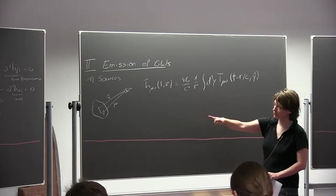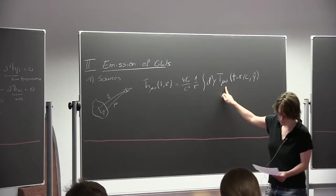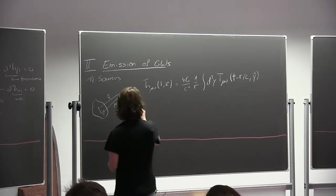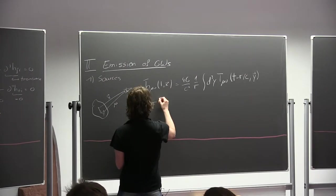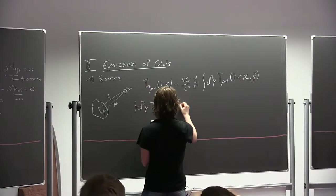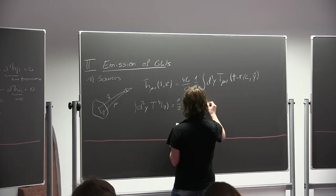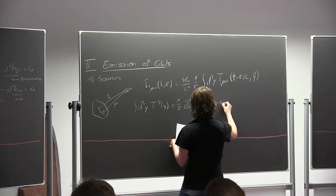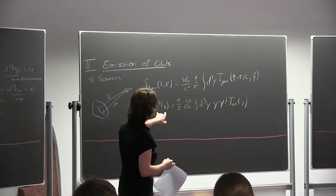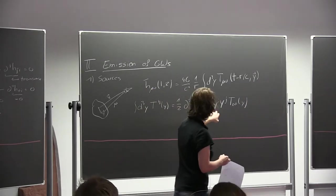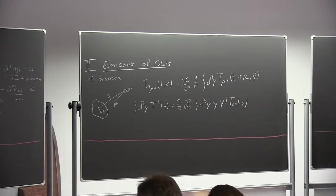We're going to work in transverse traceless gauge outside the source, so we'll be mainly interested in the spatial components. For the spatial components, I'm going to claim the following relation holds and we'll prove it in a minute: I can express the spatial components by multiplying the distance vectors with the 0,0 component of the energy-momentum tensor. That's not obvious, but let me show you why it's true.